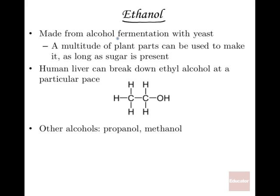Alcohol is kind of like the waste product of yeast as they metabolize sugars. A multitude of plant parts can be used to make ethanol as long as sugar is present. Wine is not just made from grapes — you can make wine from plums or apples. Grapes are so common because they have a really high sugar content compared to other fruits.